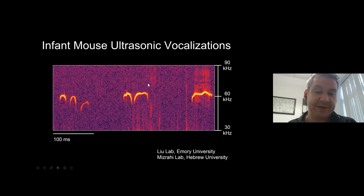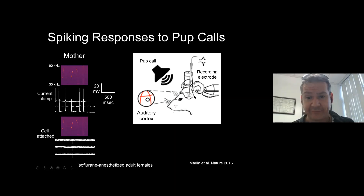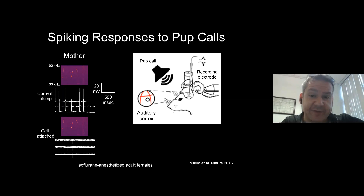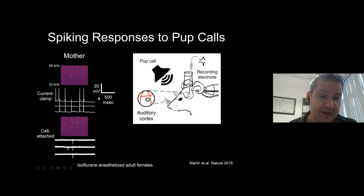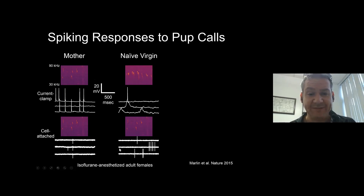Our work is inspired by pioneering work by Robert Liu and by Adi Mizrahi. Similar to what Adi's group does, we make whole-cell and loose-patch recordings in head-fixed animals. In the earlier paper, everything was under anesthesia. The animal is anesthetized with isoflurane, head-fixed, with a craniotomy over left auditory cortex. In mother animals, a number of spikes are evoked with high temporal precision. In naive animals there's a much weaker response — really no difference from baseline. In virgin animals who've been co-housed and verified as retrievers, we see responses that look much more like the mothers.